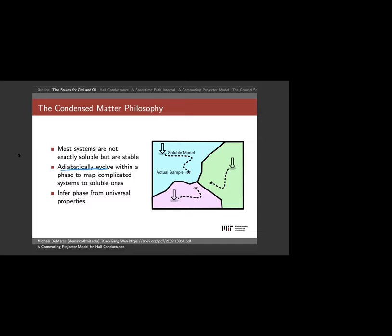Recall adiabatic evolution: most of the time if you change the parameters of a system it changes smoothly, but occasionally it'll change dramatically — that's the concept of a phase of matter. Water is the same at 5°C and 6°C, but going from 1°C to -1°C things change dramatically. The conceit of condensed matter is that actual systems are hard to solve, so you adiabatically evolve to a soluble model and then understand which properties — like symmetry and entanglement — are universal throughout the whole phase.